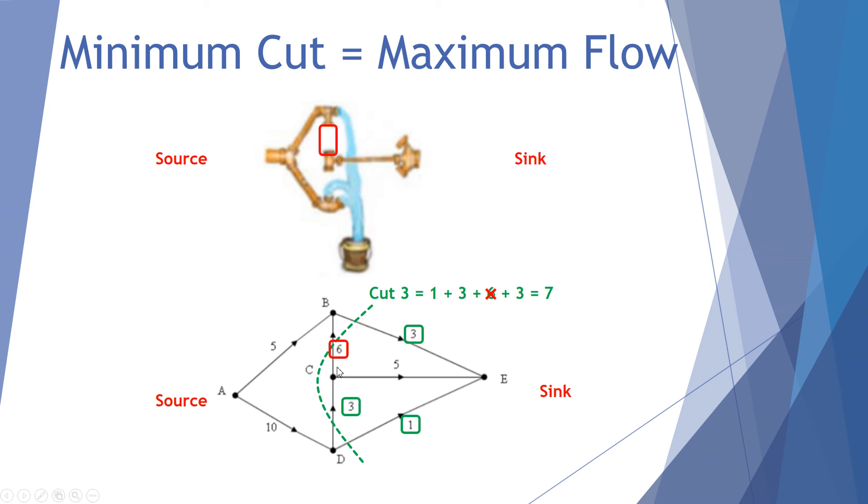Because in slicing the bottom one here with a capacity of 3, no water actually reaches this capacity of 6. So the true cut capacity here is a 1 and a 3, not including the 6, so the 6 is removed, and a further 3. 1, 3, and 3 gives me a capacity of 7.